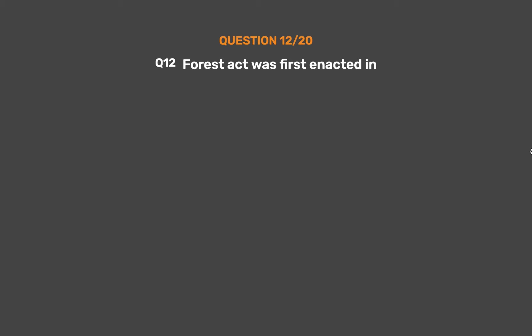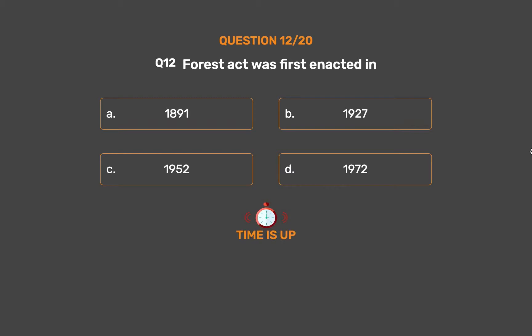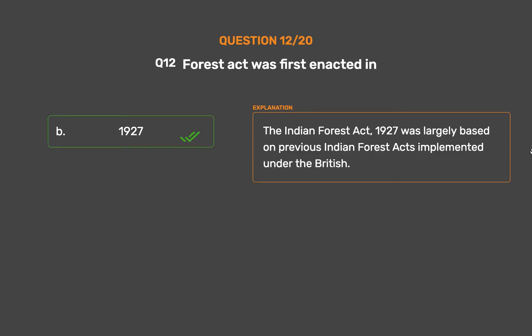Question number twelve: the Forest Act was first enacted in which year? Option A: 1891. Option B: 1927. Option C: 1952. Option D: 1972. The correct answer is option B, 1927. The Indian Forest Act of 1927 was largely based on previous Indian forest acts implemented under the British.